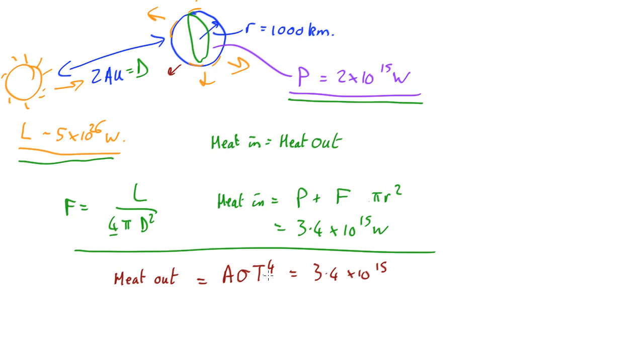So divide by a and sigma and take the 4th root, and you end up with the temperature, which comes out as 262 Kelvin. So it's pretty cold on the surface. That's well below zero, but not incredibly cold. That's minus 11 degrees centigrade. So cold, but not too frigid on the surface of this space station.